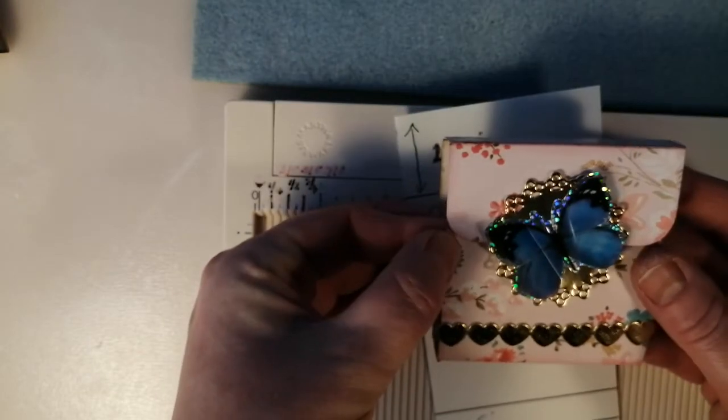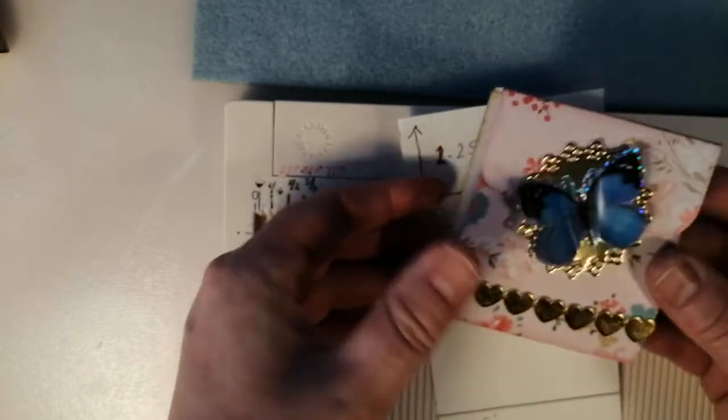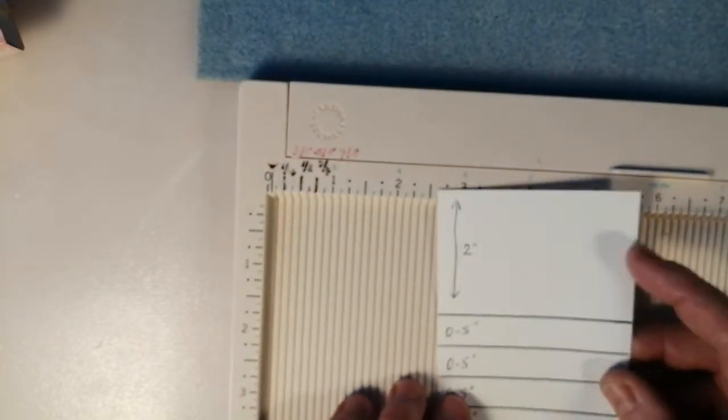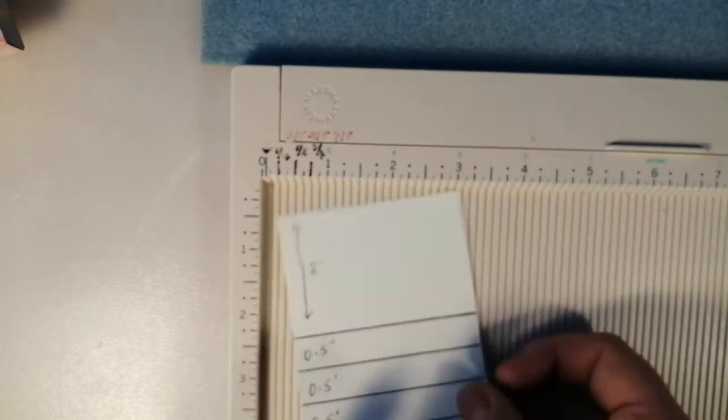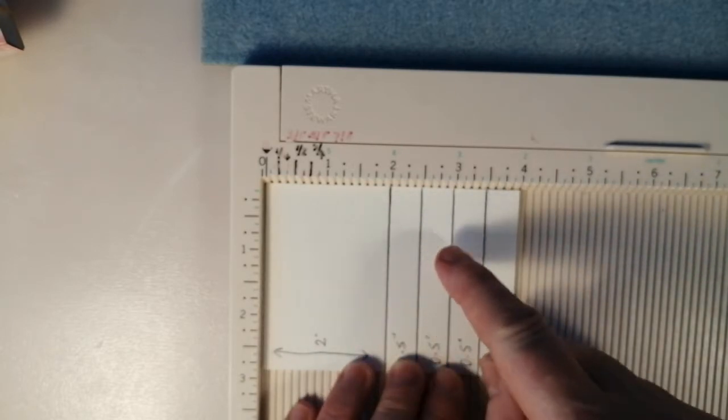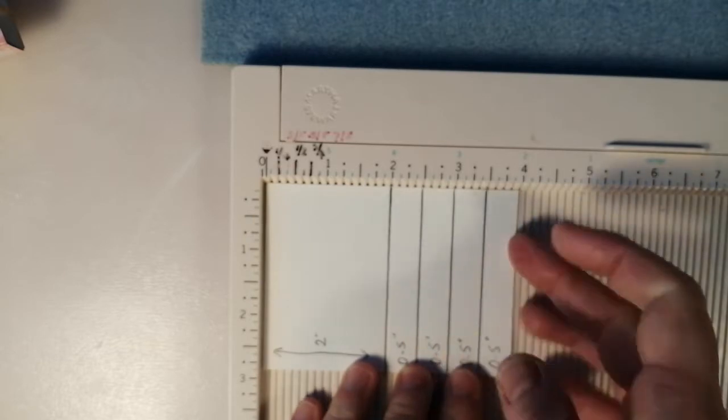You can see that mine stop reasonably short. You could come down another half inch, three quarters of an inch if you wanted to. Then I've got another piece which is four inches by three inches again and I've scored this one at two, two and a half, three, three and a half.